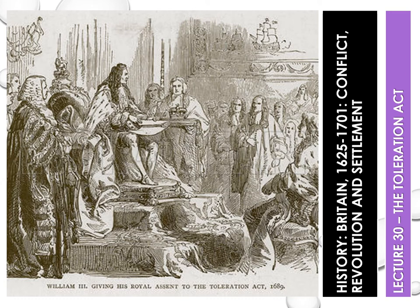As well as a political settlement, there was a religious settlement too. When William took the crown, he wanted to remove the Test Act, which meant there would be no need to take Anglican Communion to be a public office holder. When William faced concerns from Tories and Anglicans, he attempted to pursue a middle path.